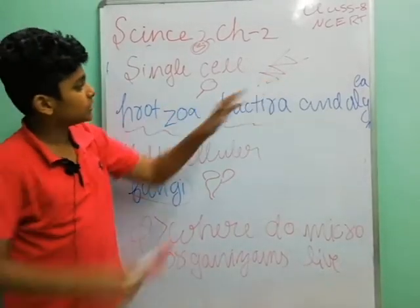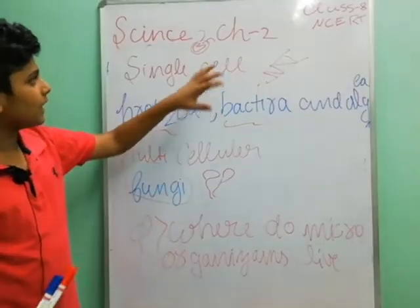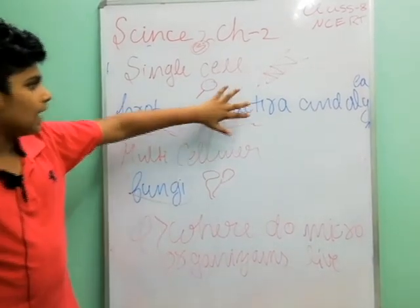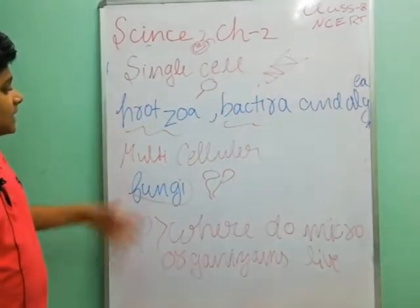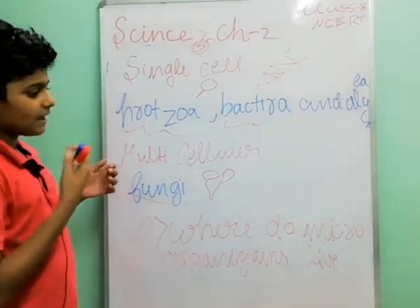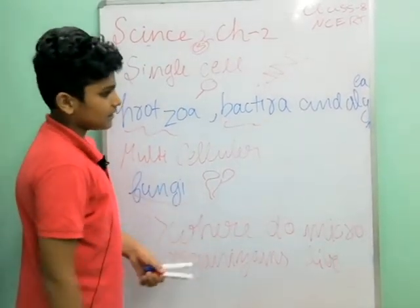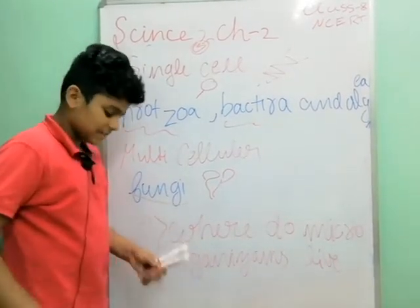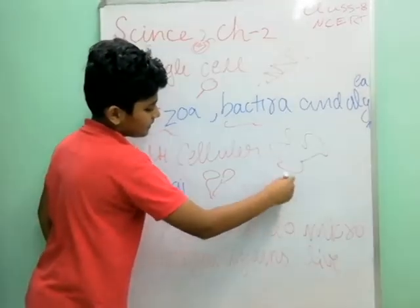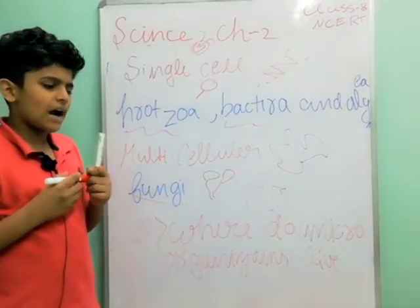The algae is called spiro. When it comes to protozoa, it is called amoeba. Amoeba is a single cell — it is single-celled and can be found in various shapes. It is called an amoeba.